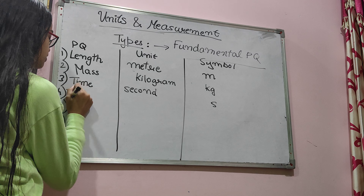The third type is supplementary physical quantity. There are two supplementary physical quantities: plane angle and solid angle. Plane angle is two-dimensional and solid angle is three-dimensional. For example, if I have a 2D square, the angle formed is a plane angle. But if I have a cone-like cap, the angle forming inside it is a solid angle, as it is three-dimensional.